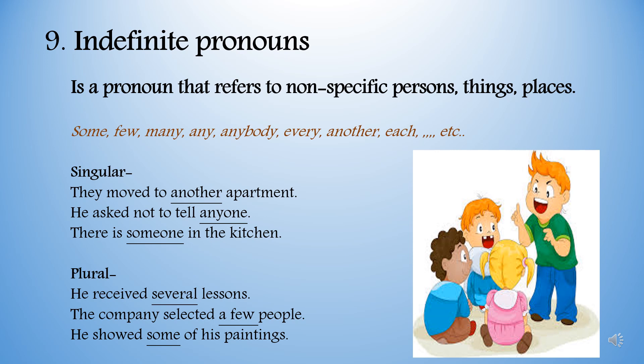Indefinite pronouns. A pronoun that refers to non-specific persons, things, or places — like some, few, many, any, anybody, every, another, each, etc. Singular examples: They move to another apartment. He asks not to tell anyone. There is someone in the kitchen. Plural examples: He received several lessons. The company selected a few people. He showed some of his paintings.